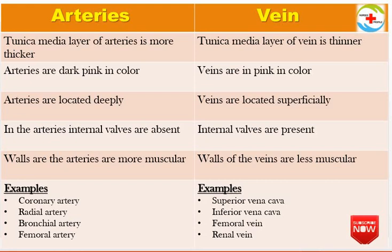For example, arteries include the coronary artery, radial artery, bronchial artery, and femoral artery. Veins include the superior and inferior vena cava, femoral vein, and renal vein. Please like this video and share it with your friends, then subscribe to our channel. We will see these classes one by one. Thank you.